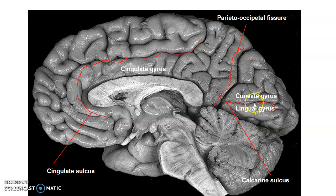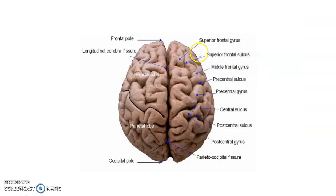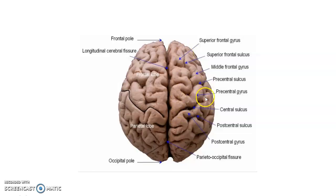The portions of these gyri that form the banks of the calcarine sulcus are the primary visual centers, which we shall discuss. The cingulate gyrus is separated by the cingulate sulcus from the remaining parts of the frontal and parietal lobes. That's the superior frontal gyrus, middle frontal gyrus, and the inferior one. This is the central sulcus; anterior to it is the precentral gyrus and posterior to it is the postcentral gyrus. That's the parietal lobe, and anterior is the frontal lobe. That's the longitudinal fissure, and medially you can appreciate the parietal-occipital fissure.